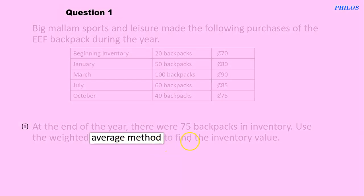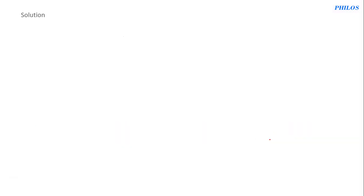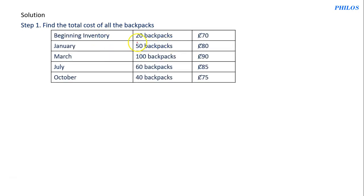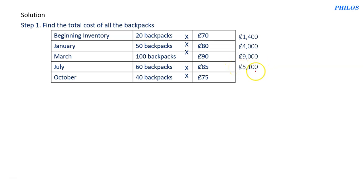Use the weighted average method to find the inventory value. To solve this, the first step is to find the total cost. So to find the total cost, let me redraw the table. To get a total cost, we are going to multiply each quantity by the unit price: 20 backpacks times 70 gives 1,400; 50 times 80 gives 4,000; 100 times 90 gives 9,000; then 60 times 85 gives 5,100.